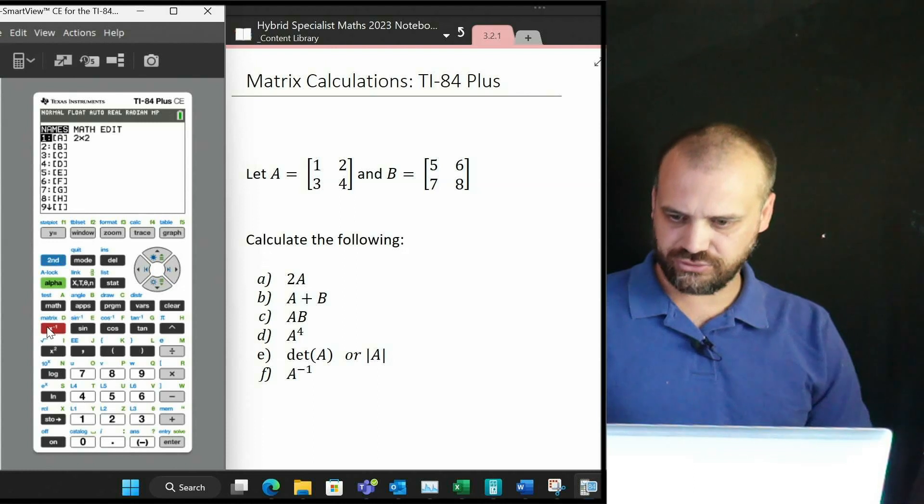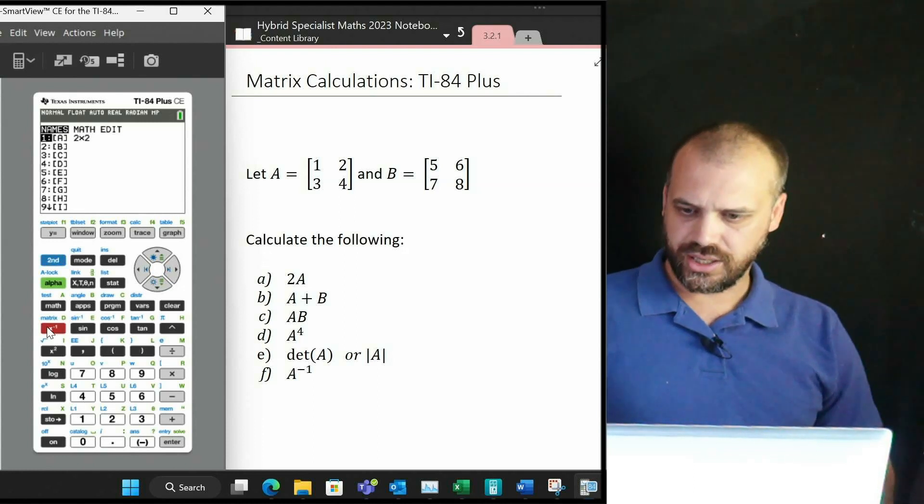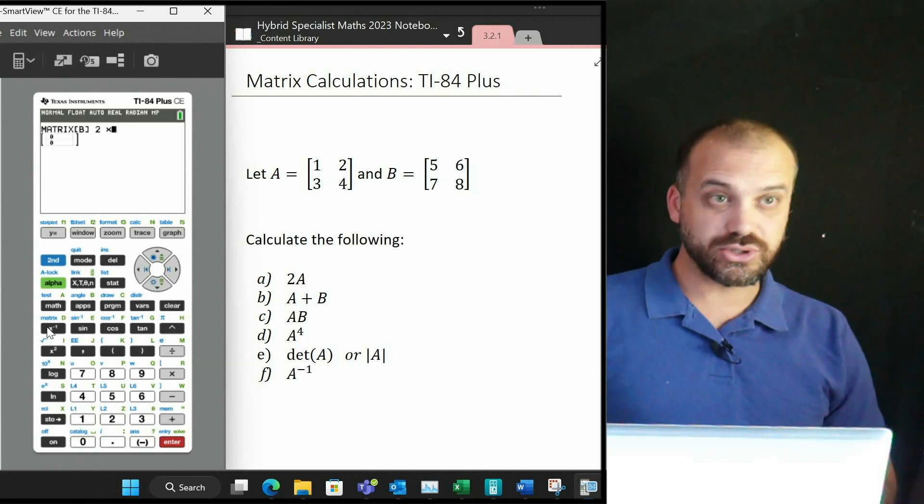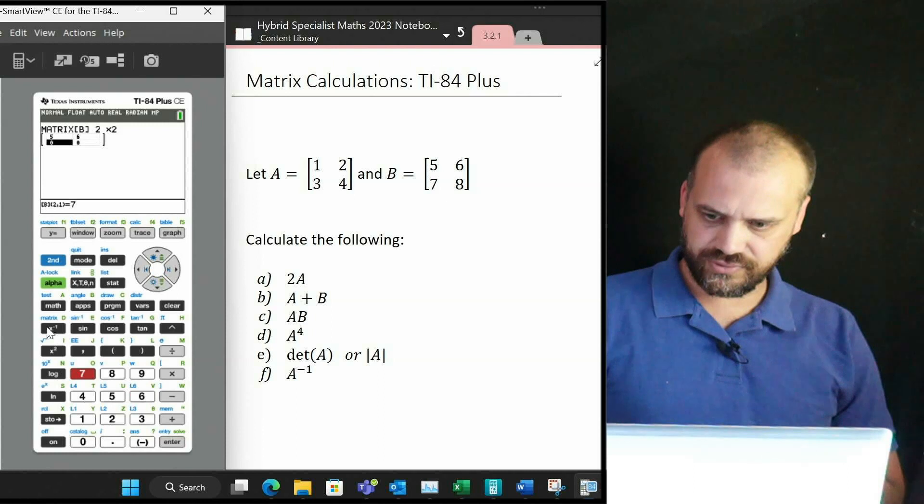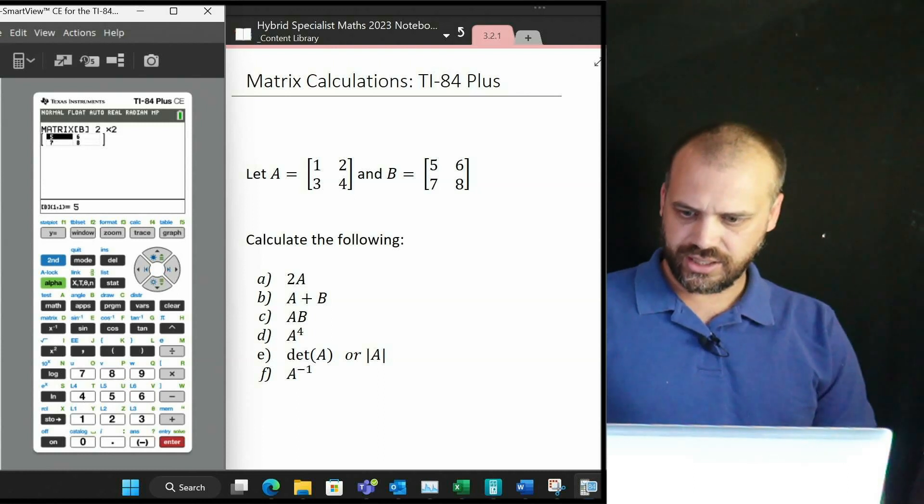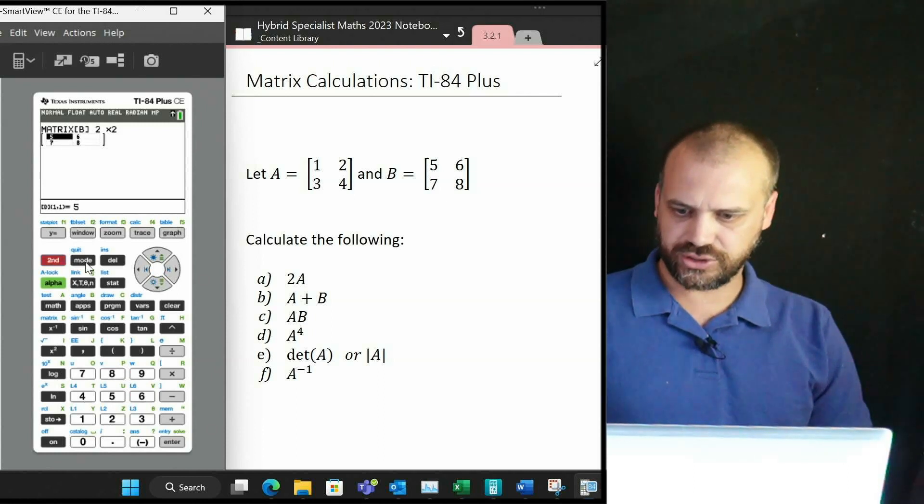I'm going to click second function matrix again, go back to where I was, arrow across again down to the second one, and this is also a 2 by 2. I'm going to put 5 enter, 6 enter, 7 enter, 8 enter, and then I'm going to go second function quit.